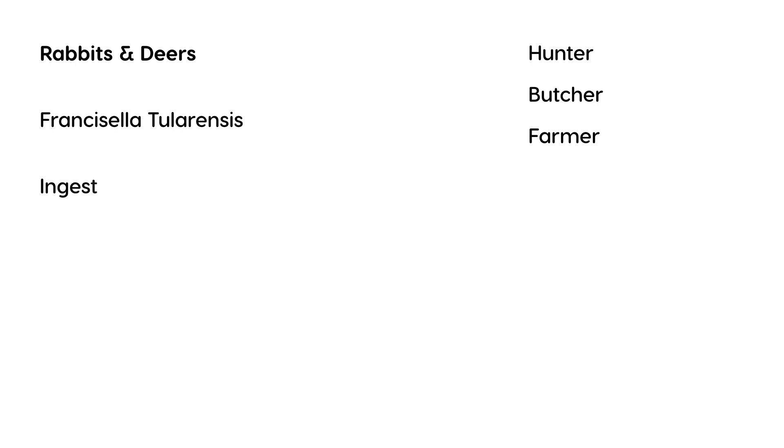A typical scenario is you have either someone who is a hunter, a butcher, or a farmer — somebody who deals with animals. What happens is the organism can cause tularemia if the person either ingests contaminated food or water, is bitten by a deer or tick, inhales the organism, or has some sort of direct contact with the organism.